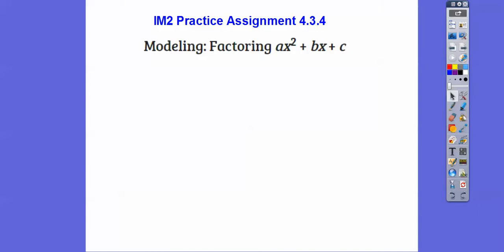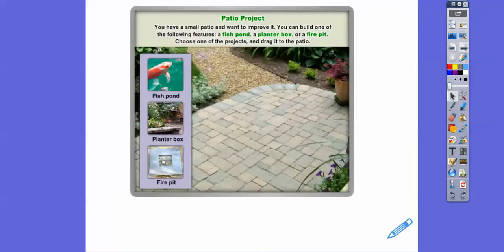Hey everybody, this lesson is on factoring AX squared plus BX plus C and we're modeling this. So it looks like we're going to build a patio. You have a small patio and want to improve it. You can build one of the following features: a fish pond, a planter box, or a fire pit.